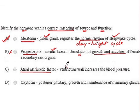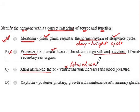For atrial natriuretic factor, the source given is the ventricular wall, which is incorrect — it is actually secreted by the atrial wall. That is why this also becomes an incorrect match.